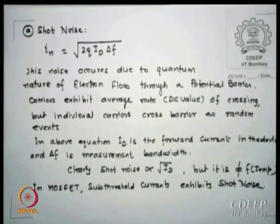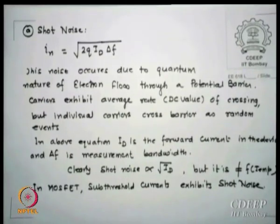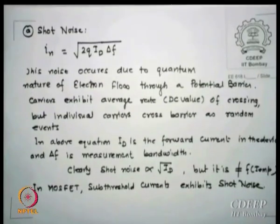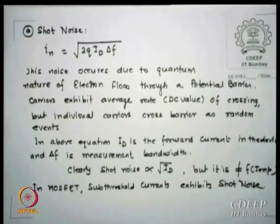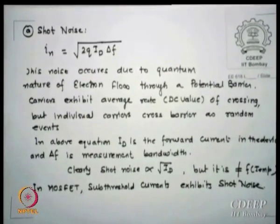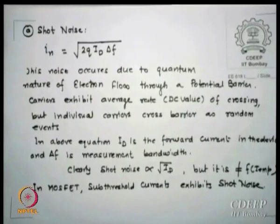In MOSFETs particularly, shot noise is not seen in the saturation region, but more so in the sub-threshold region where current is of the form e^(QV/KT). There MOSFETs do show some kind of shot noise; otherwise most of the time MOSFETs do not show any shot noise. So shot noise is essentially randomness in carrier motion across a barrier, though on average there is a DC value available.